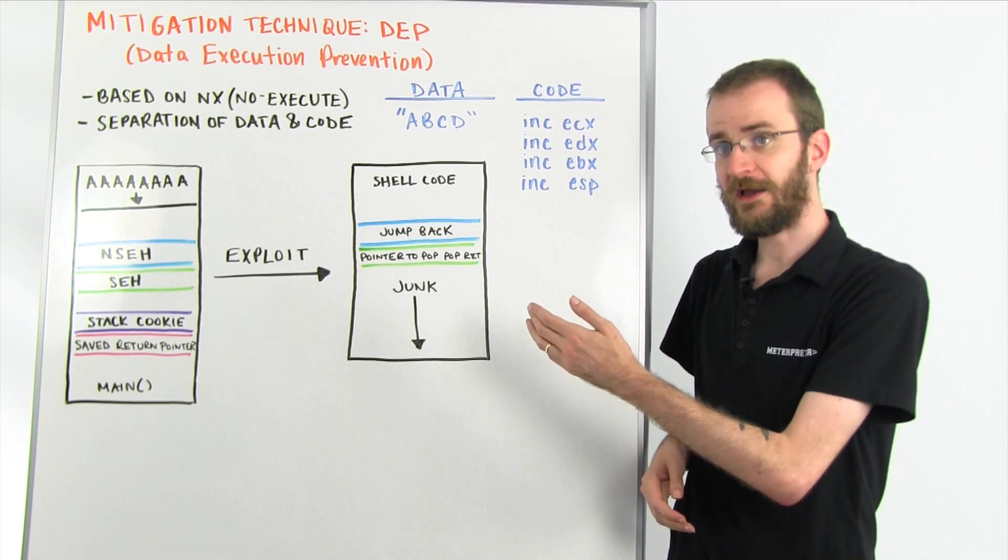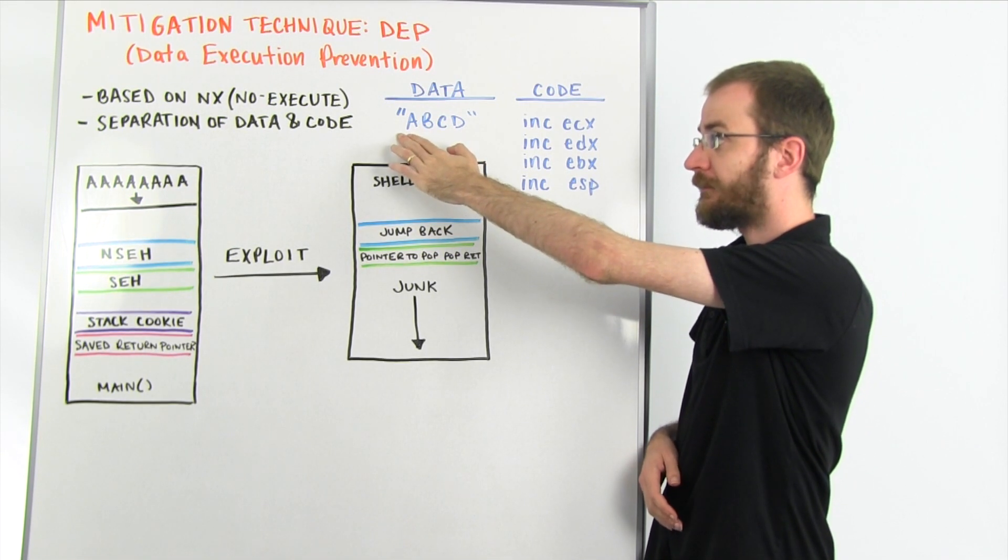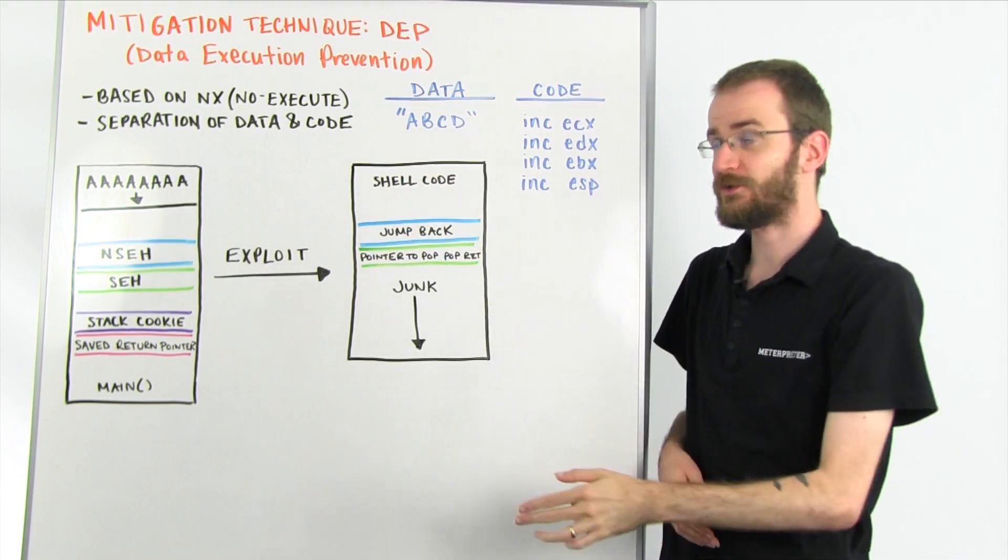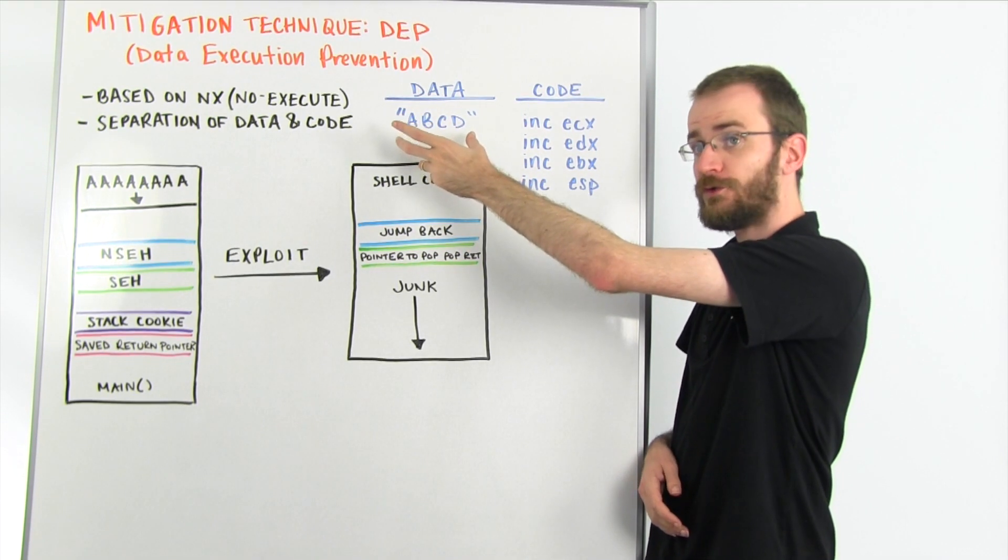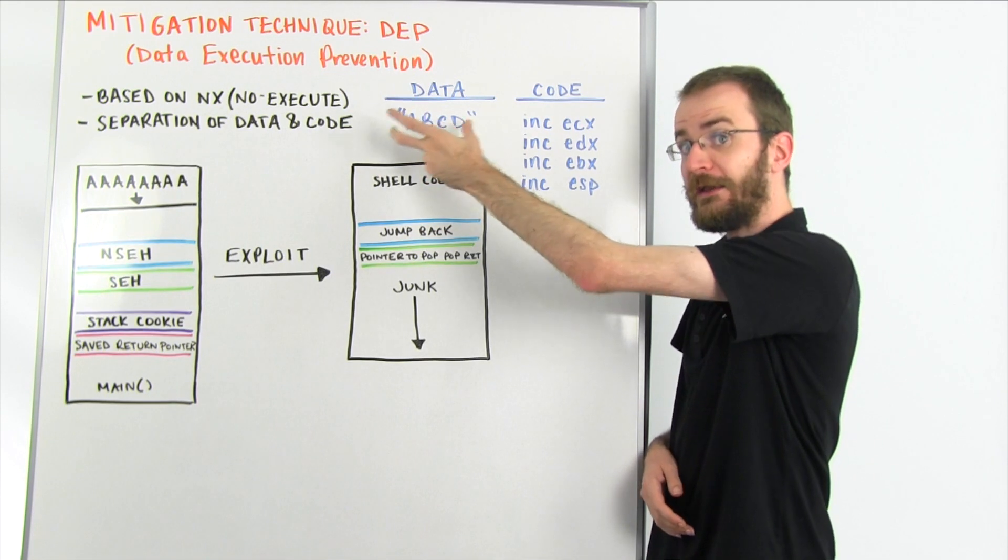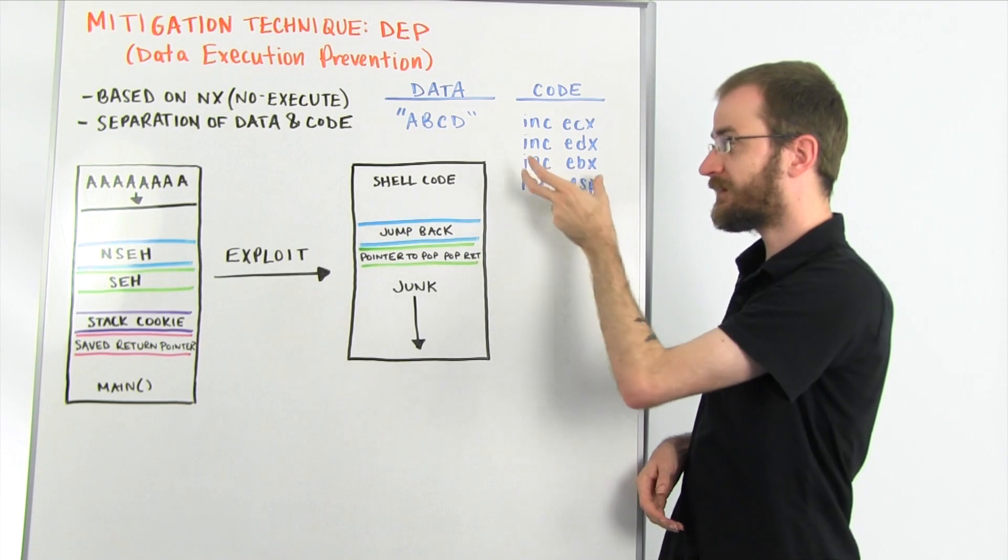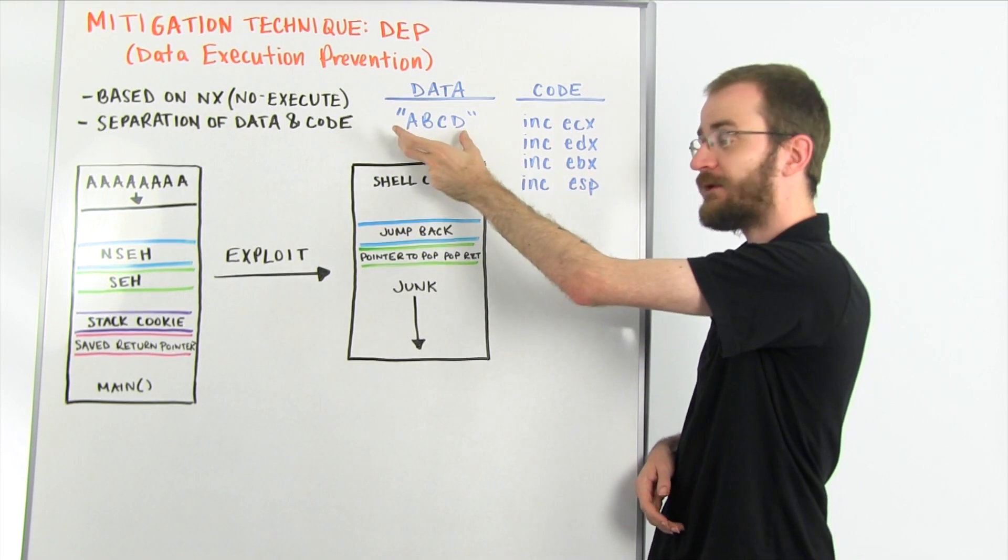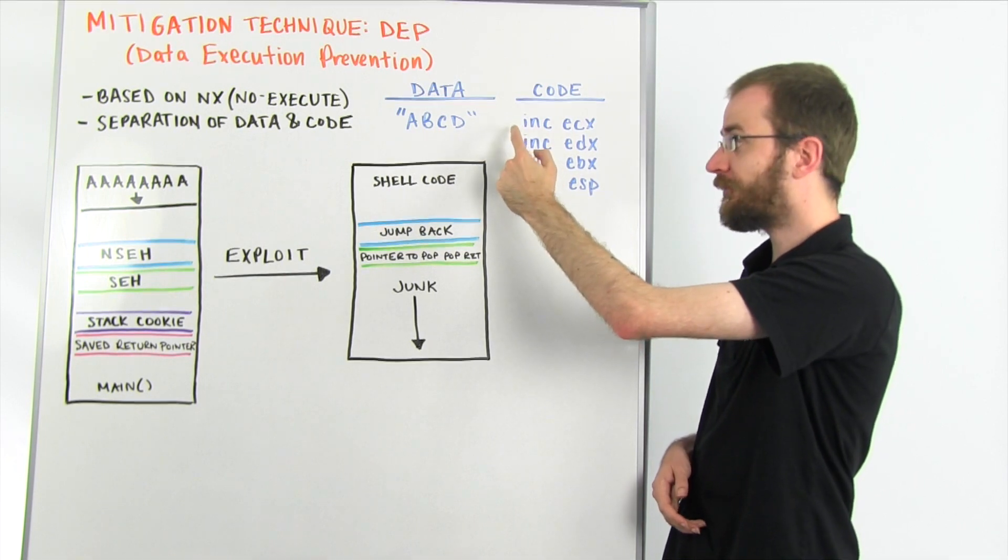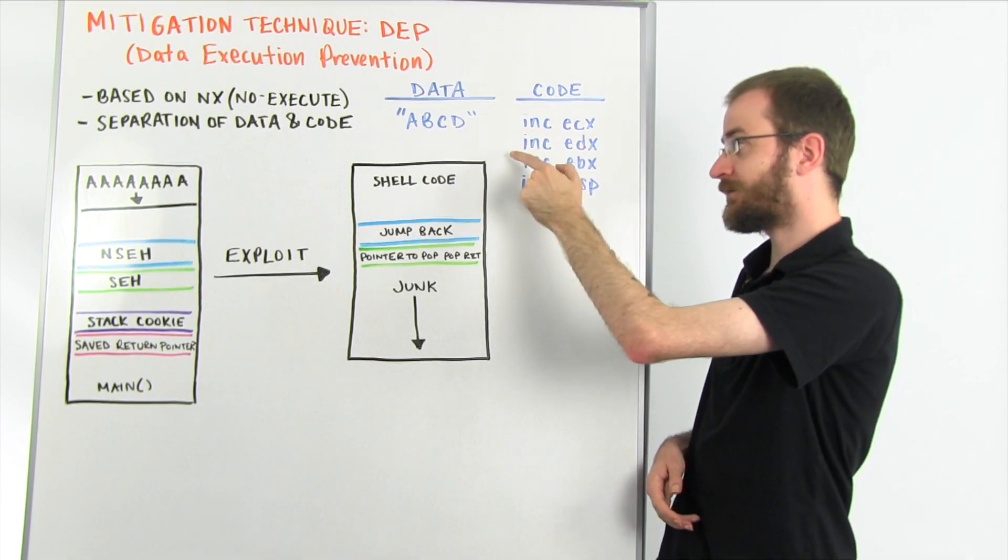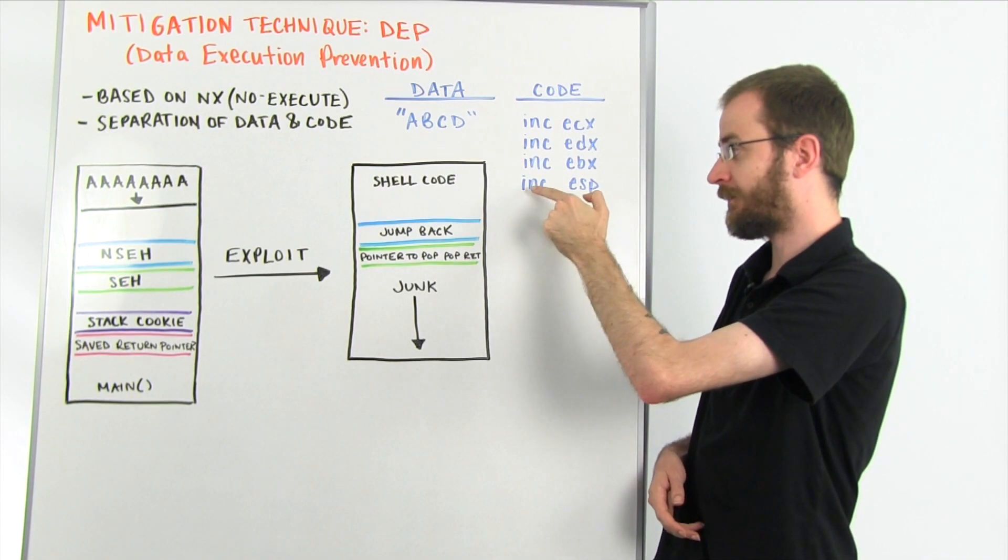For example, you can have the exact same data represented as capital A, capital B, capital C, capital D as a string, and if you see that on the stack, the program is going to choose to interpret that as the string A, B, C, D. However, if you see that in the section of memory reserved for executable code, those same exact bytes translate into four different instructions: increment the ECX register, increment EDX register, increment EBX register, and increment ESP.